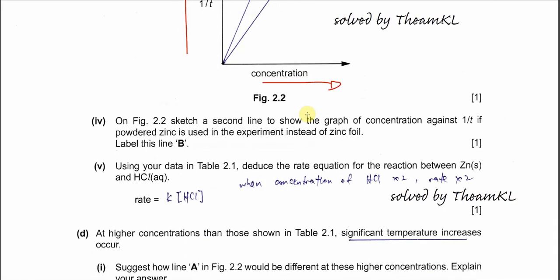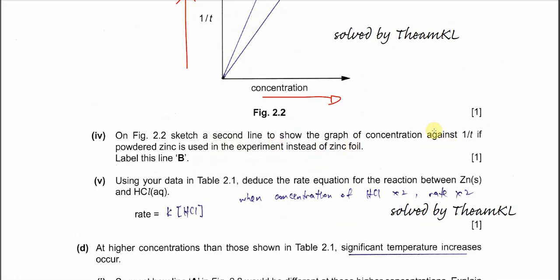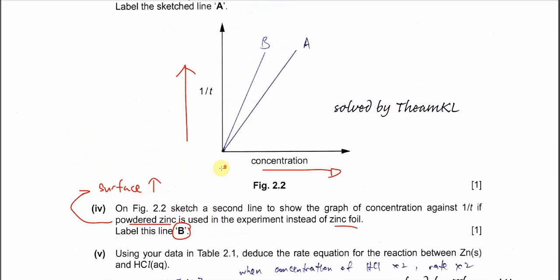Part 4. On figure 2.2, sketch a second line to show the graph of concentration against rates if powdered zinc is used. A is the zinc foil, but now line B is for the powder. Zinc powder has higher surface area because it's smaller particles, therefore it's actually faster. You need to draw another line B - make sure it's steeper than A because powder reacts faster than the foil.